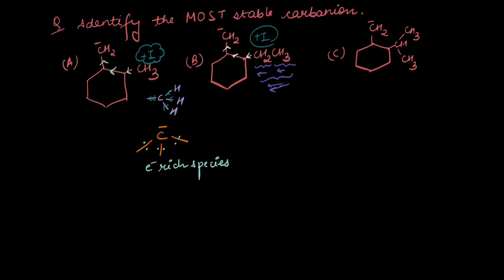More electron density would be pushed forward through sigma bonds for the second case, and the third one would have the highest plus-I effect. But a carbanion already has a lot of electron density, and somebody is just pushing more onto it — that doesn't help stabilize it. So all three would be destabilized. But if we compare them and find the most stable, we look at the one that is least destabilized. Since the plus-I effect of a single methyl group is the least, it destabilizes the carbanion the least, and therefore the first option would be the most stable.